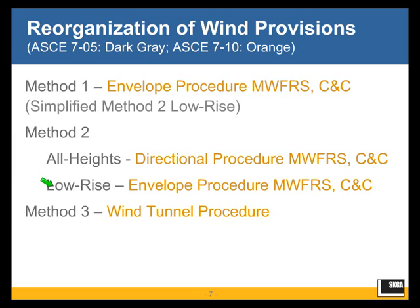Under Method 2, the analytical procedure, there are two distinct and separate methods. There is the general analytical procedure applicable to buildings of all heights — also called the all heights method — and then there is the low-rise analytical procedure applicable to buildings having a mean roof height not exceeding 60 feet.